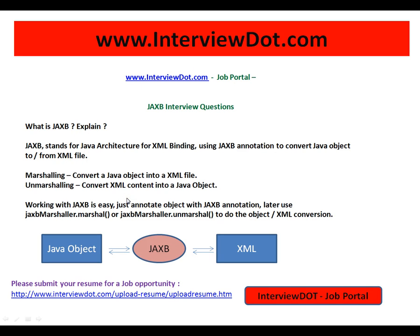Prior to JAXP, we were using DOM and SAX parsers — those are the two parsers used to parse XML files. After JAXP was introduced, it's really easy to use. It has only two concepts: marshaling and unmarshaling. Marshaling means converting a Java object into an XML file; unmarshaling means converting XML content into a Java object.